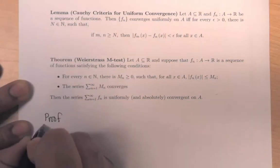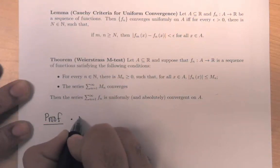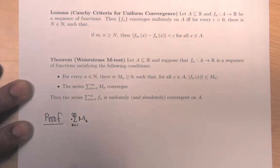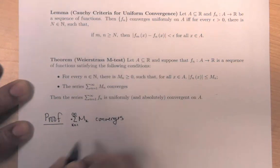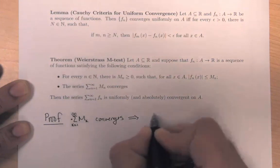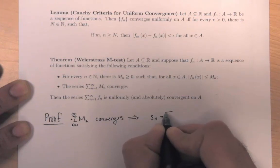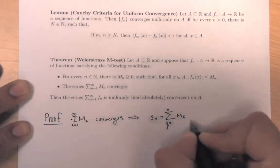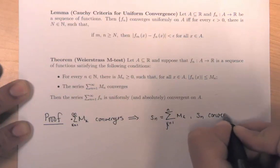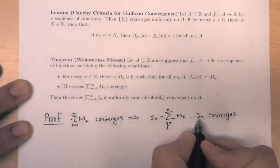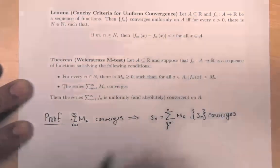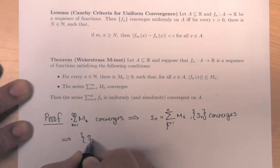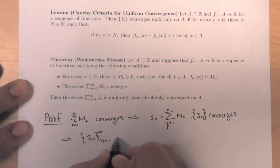Let's prove the result. The second bullet says that the series Σm_k for k from 1 to infinity converges. That's equivalent to saying the partial sum sequence S_n = Σ_{k=1}^{n} m_k converges — and S_n is just a sequence of numbers. Therefore, this sequence for n = 1 to infinity is Cauchy.